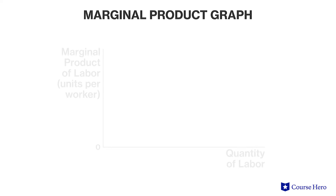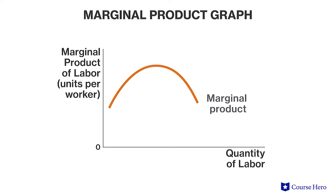The law of diminishing marginal returns is the observation in the short run that each additional unit of the production input, holding all other inputs fixed, will yield progressively smaller increases in output. The rate of increase in output slows down, eventually reducing the output. As increments of one input are added, a point is reached after which the return achieved from each additional input falls.